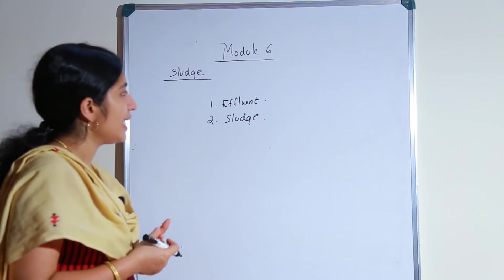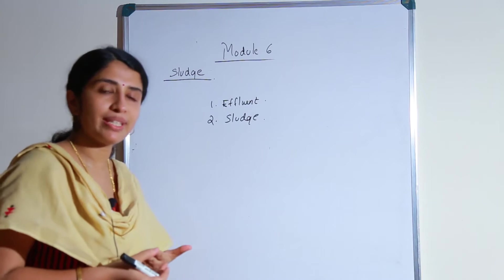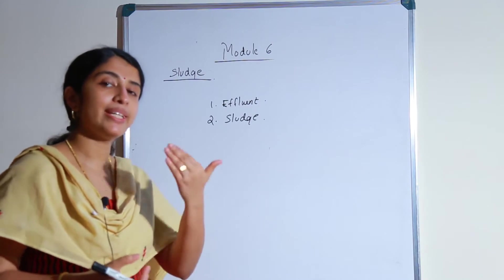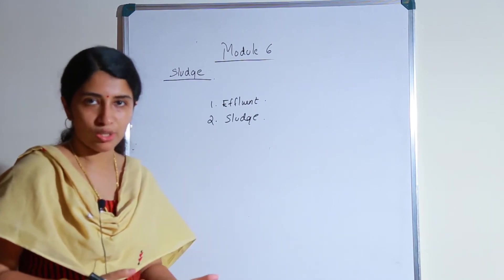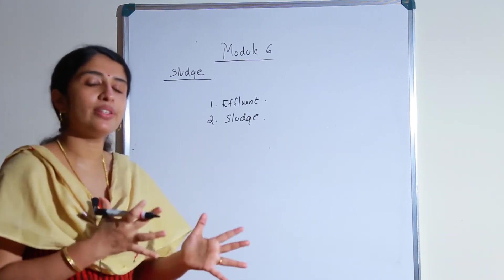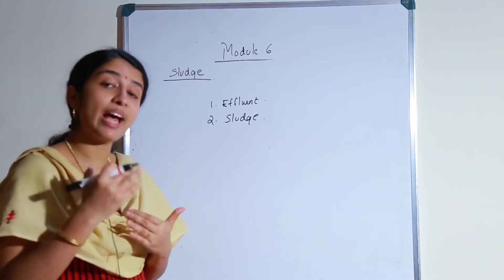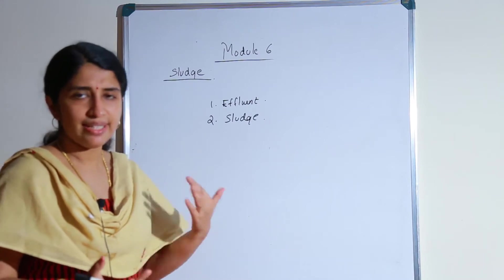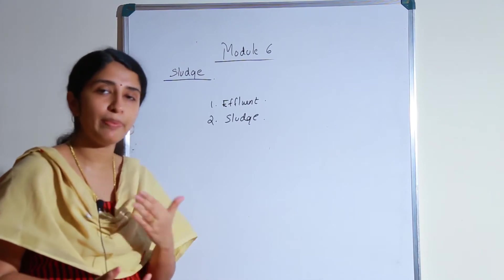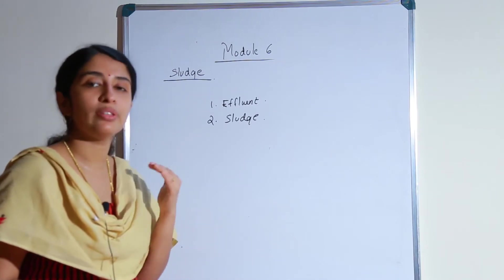Sludge means it is the settled particles in different wastewater systems. If you are considering a primary sedimentation tank, after its working the suspended particles will settle down at the bottom — that settled material is called sludge. The peculiarity of sludge is that it has a high amount of organic matter and also a high amount of moisture content. Since it contains high organic matter, it is highly putrescible or offensive in nature, so we have to treat it before disposal.